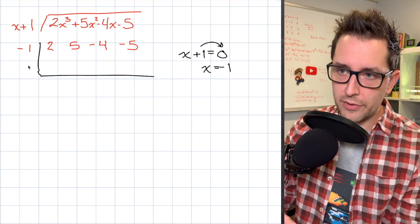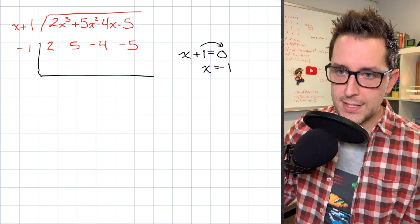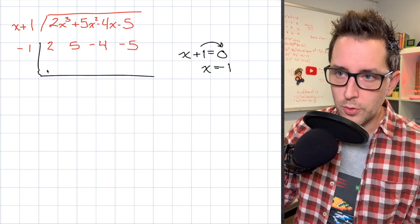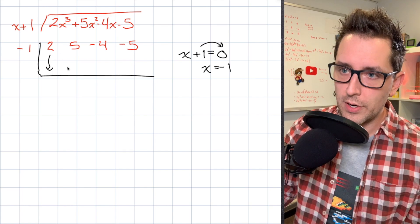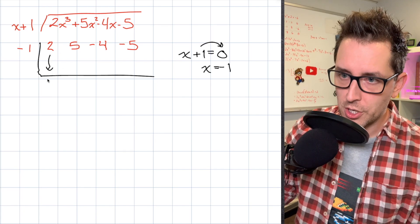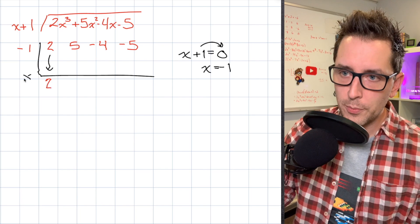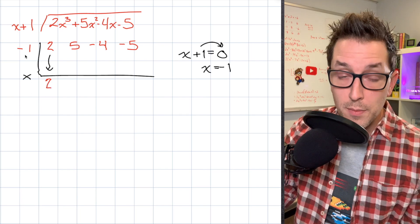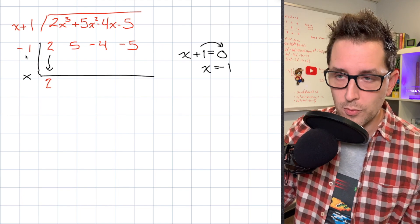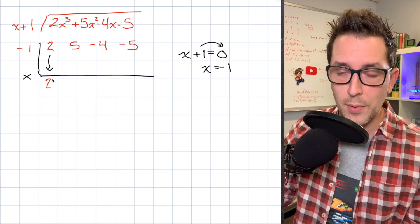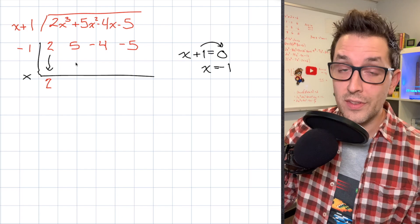Now the next step in the synthetic division process is that we're going to take that first coefficient of 2, and we're going to bring it down underneath and just write it underneath our chart right here. We're going to take that coefficient of 2, and we're going to multiply it by the value that made our divisor equal to zero, which was negative 1. And we're going to place the result of that multiplication right here underneath the second coefficient.